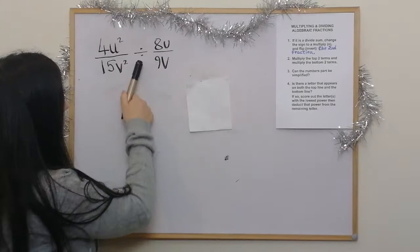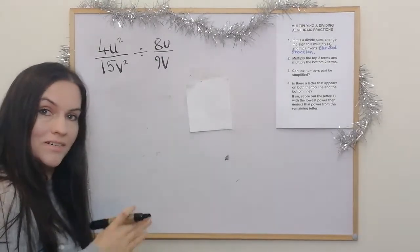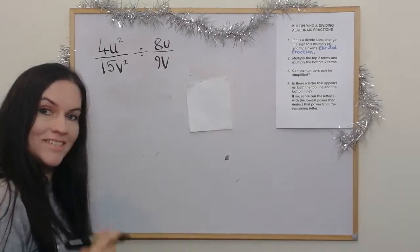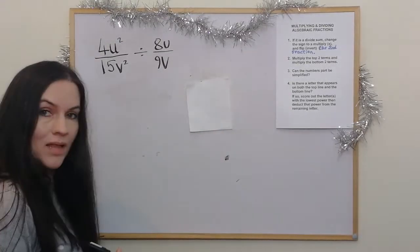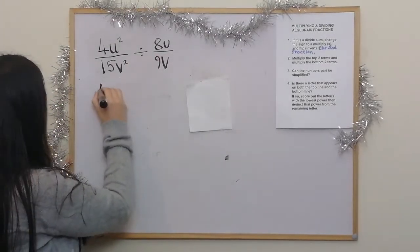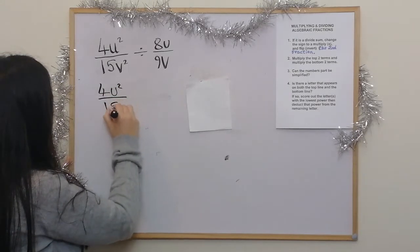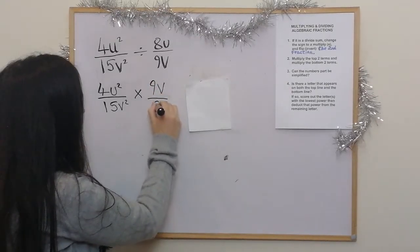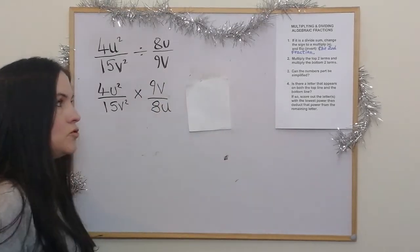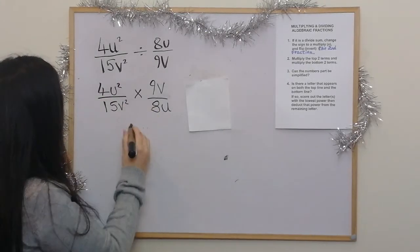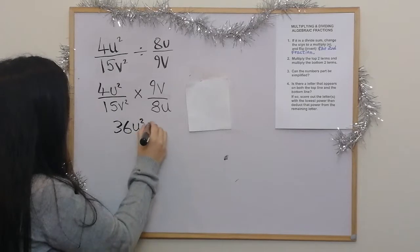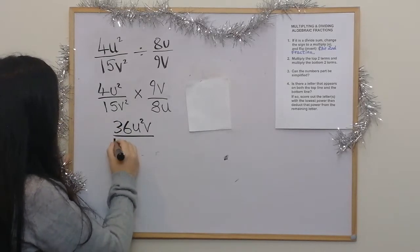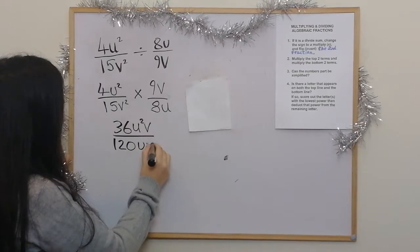This is our third example, and again it's a dividing one. As I've already said, all these examples are from past papers and study books. It's a divide sign, so I change it to a times and flip the second fraction. Then multiplying the top two terms I get 36u squared v, and multiplying the bottom two terms I get 120uv squared.